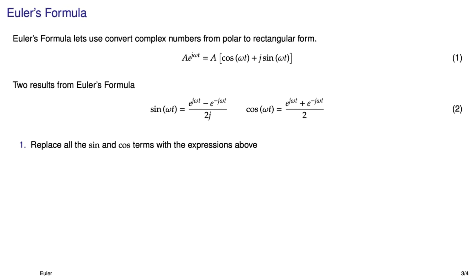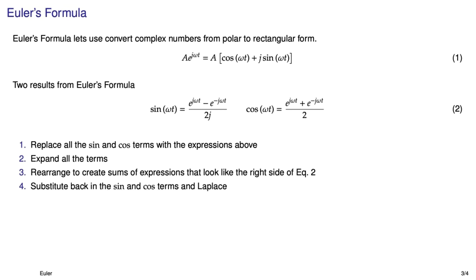The approach goes like this. We're going to take all the sine and cosine terms in the expression and replace it with those two quantities in equation 2. Then you have to expand all the terms and that gets a little bit algebra intensive but not too bad. You end up using the old first outside inside last or FOIL scheme. Then you have to be a little creative and rearrange the terms you have so that they look like the forms in equation 2 and once you have them like that you can just substitute back into the sine and cosines and Laplace away.